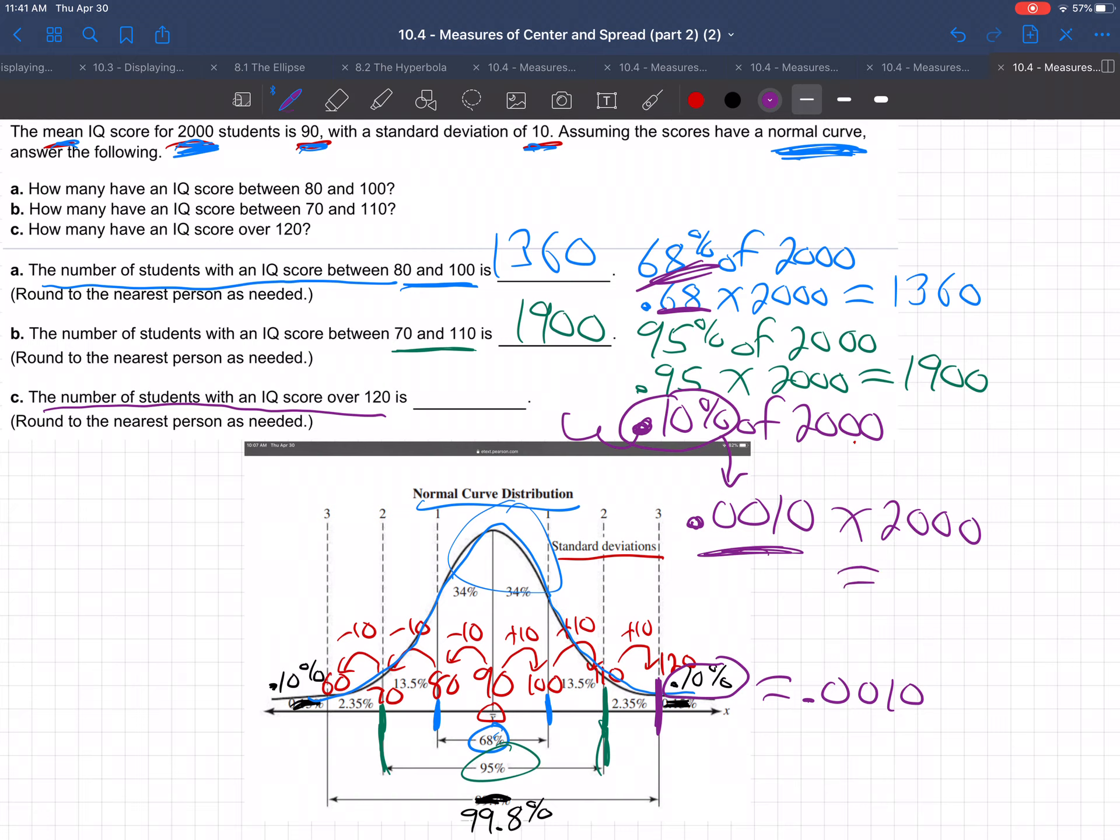Multiply that, and you get, so .001 times 2,000, you get two students. So there would only be two students out of the 2,000 that have an IQ score higher than 120. So make sure you have this normal curve here with these percentages on your notes for the exam.